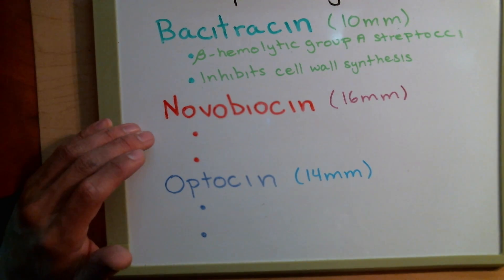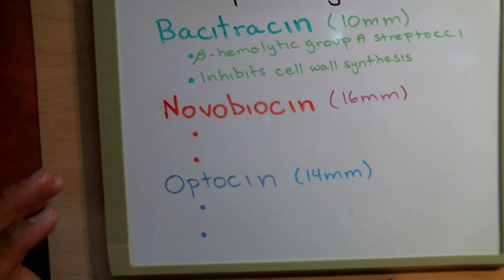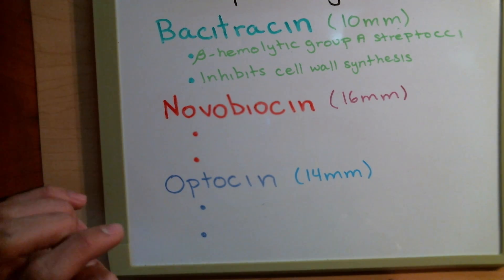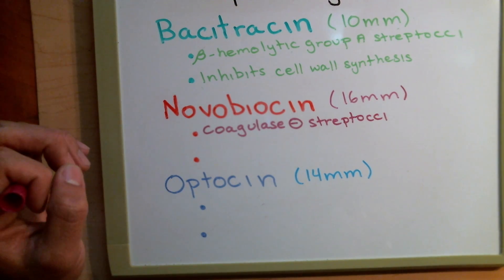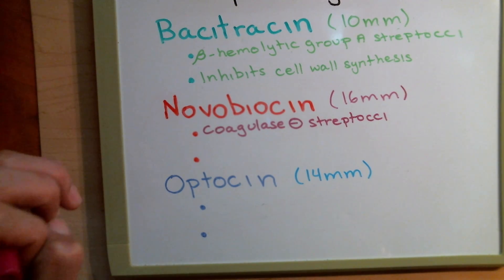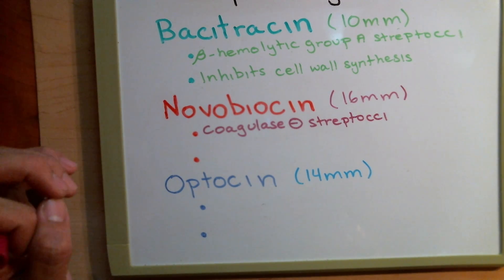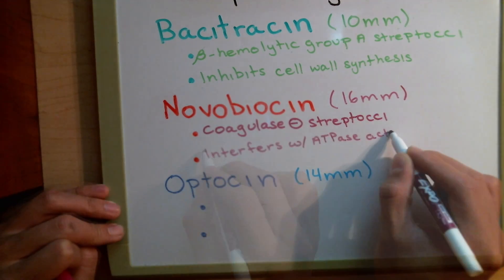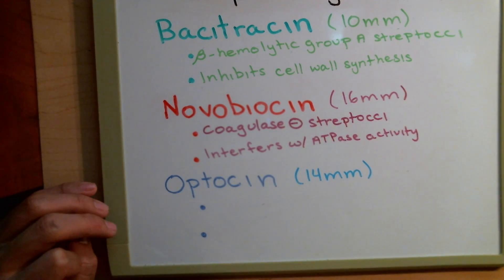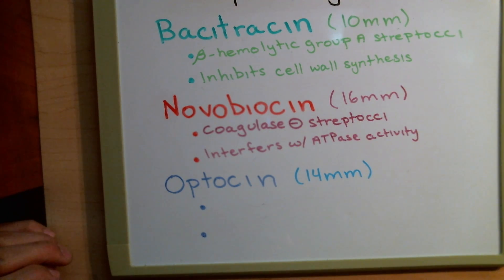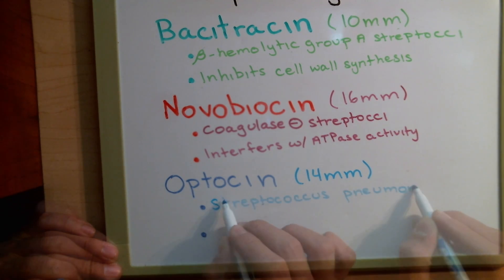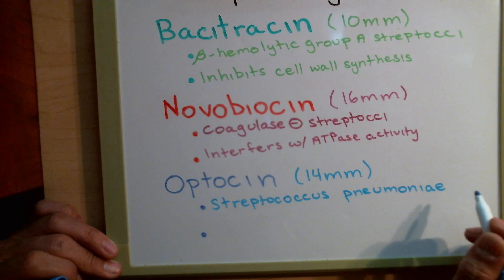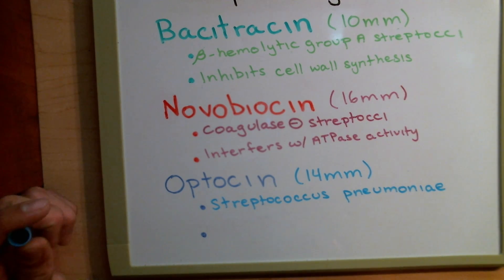Next we have Novobiocin. We're looking for the lack of growth, which would indicate a coagulase-negative streptococci. It does this by interfering with ATPase activity, thereby preventing the bacteria from producing any ATP. Then we look at Optocin, which targets Streptococcus pneumoniae, and it also interferes with ATPase activity.